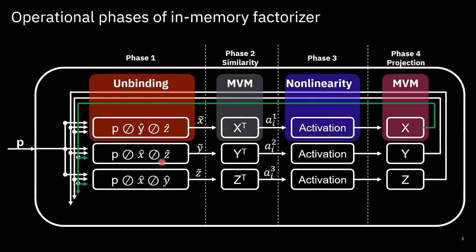We see phase one, phase two, phase three, and phase four — the result is fed back for the next iteration, for the Y factor and then the Z factor. There are certain operations that are element-wise and can be implemented with digital hardware, but there are also more computationally intensive operations: a matrix-vector multiplication in phase two and another in phase four for the projection. These are more amenable to in-memory hardware acceleration, which is what we explore in this work.